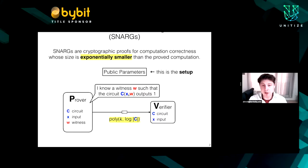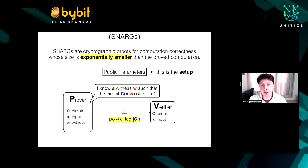Many of you know that SNARKs are impossible unless there are suitable public parameters. This is known as the setup of the proof system. SNARKs have different types of setup, but I will not really discuss these things in this talk. So we have some common language and notation — that is a SNARK.